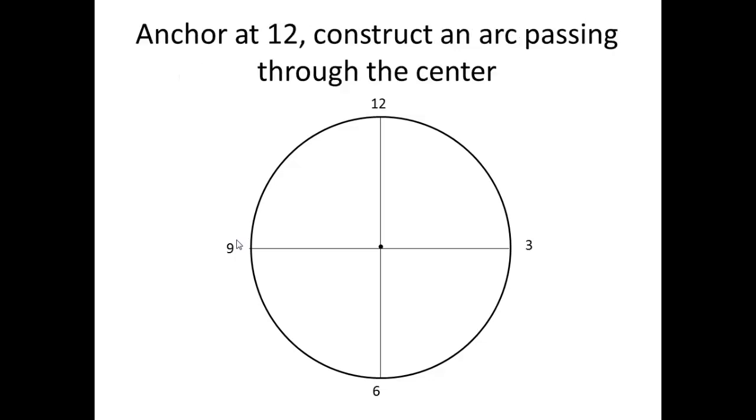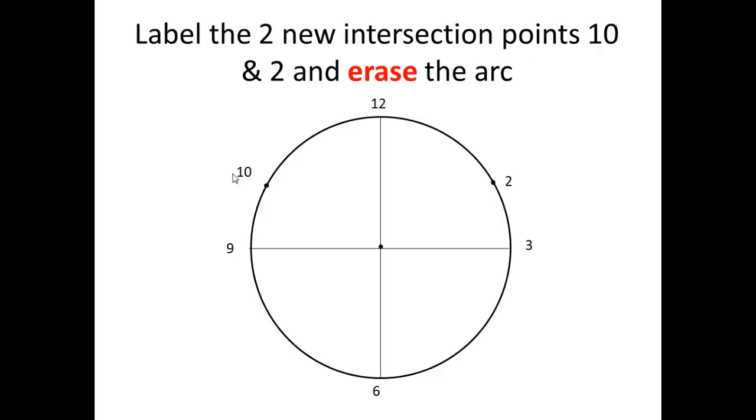So you're going to be anchoring at 12. We have 4 dots, 4 anchoring points. We will start at 12 and continue to 3, then 6 and 9. But right now, start anchoring at 12. You're going to choose a radius and construct an arc passing through the center. So your arc will look something of this nature. It's going to go right through the center, but not past it. Your arc will look much nicer than mine, not wobbly like that. Label the two new intersection points, 10 o'clock and 2 o'clock, and erase this arc. This is the one time where it's okay to erase.